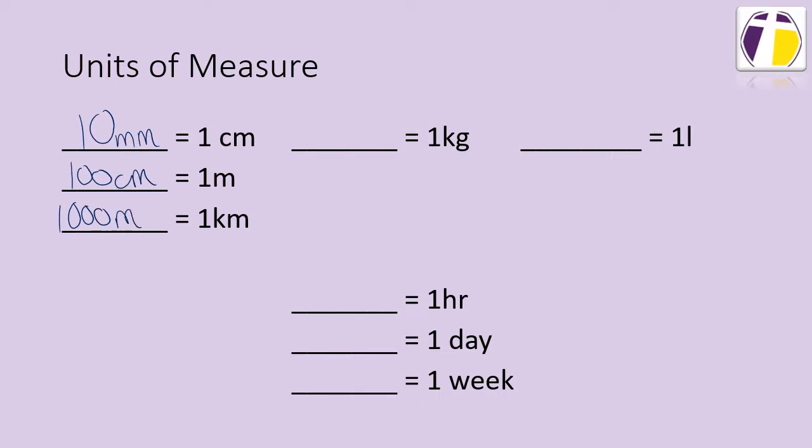One kilogram is the same as 1000 grams. There are 60 minutes in an hour, 24 hours in one day, and finally there are seven days in one week. And for capacity, we have 1000 milliliters in one liter.